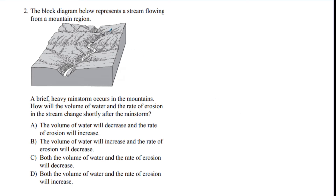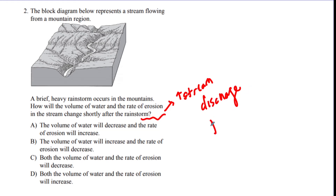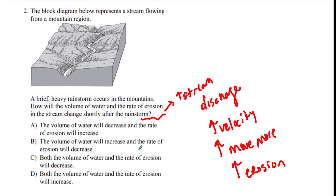Next question: a stream is flowing from a mountain region and a brief rainstorm occurs. How will the volume of water and rate of erosion change shortly after? Storms mean heavy rain, which increases stream discharge — the amount of water. More water increases speed. Increased speed means you can move more, which means more erosion. So the volume of water will increase and the rate of erosion will also increase. The answer is D.